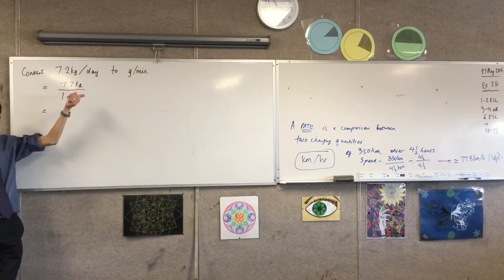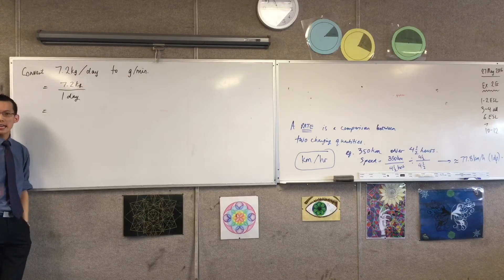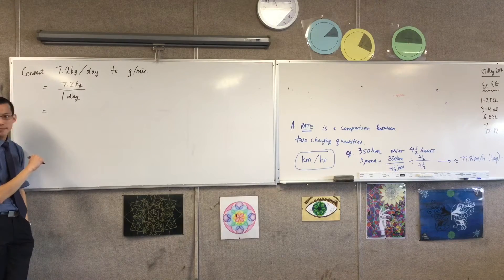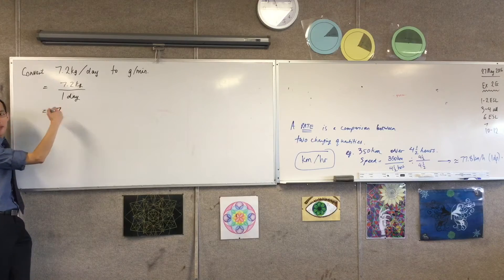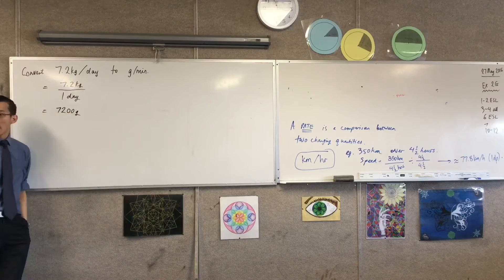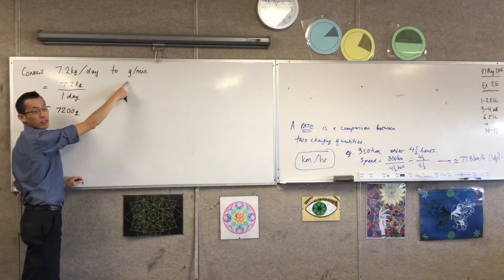So in the case of the numerator, that's really easy. How many grams are there in 7.2 kilos? It's going to be 7,200 grams, okay? So that's really good. I'm already in this unit. That's fantastic.